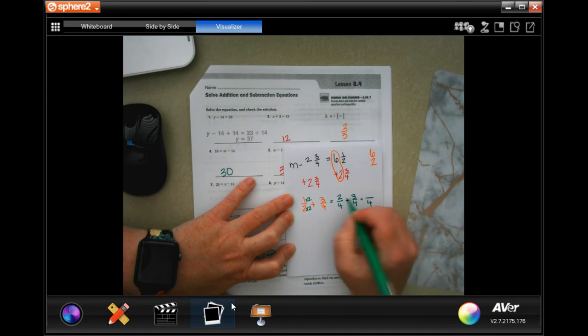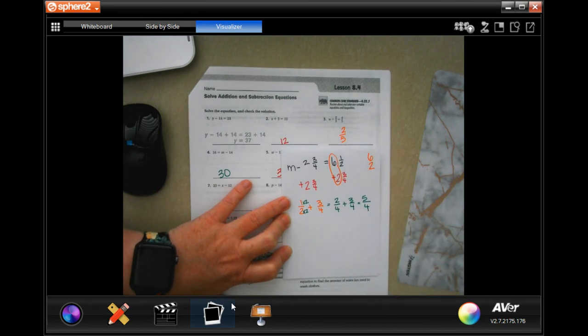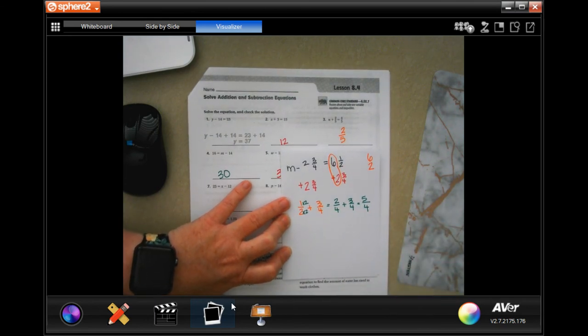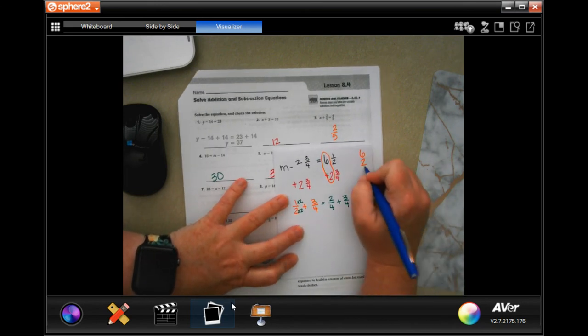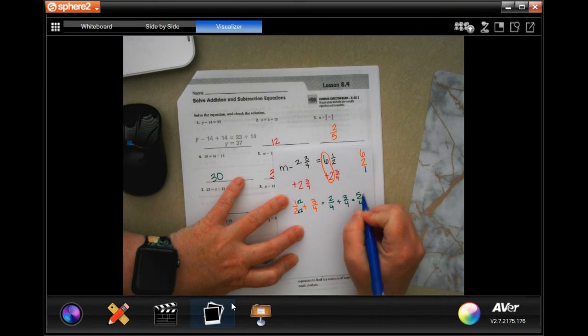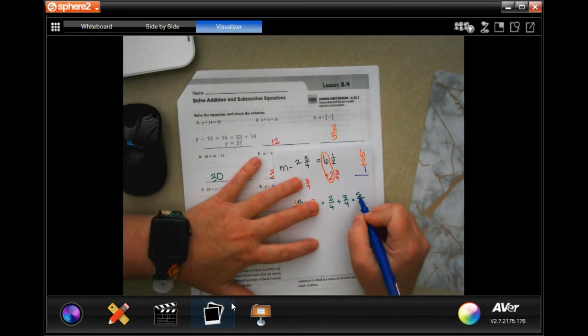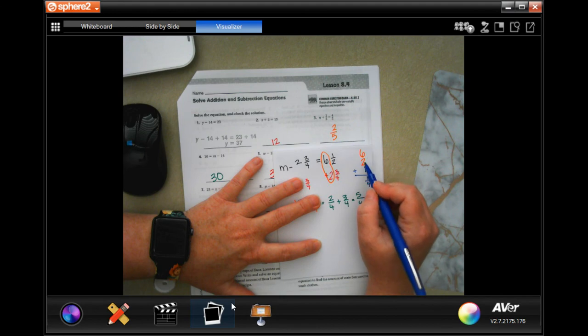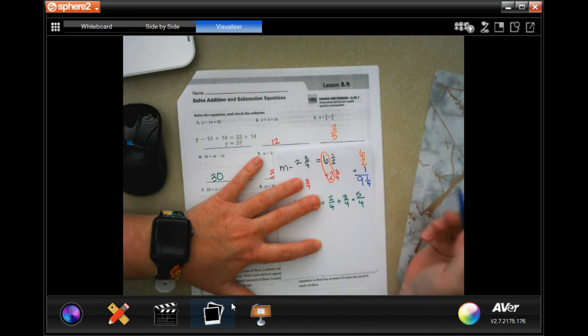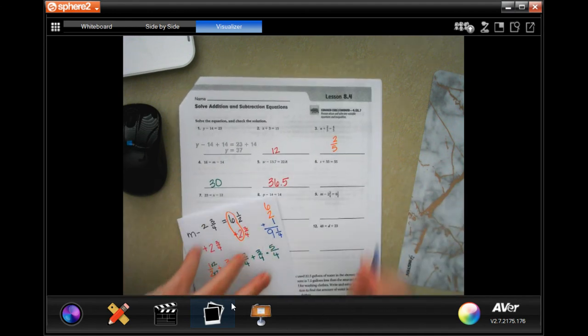Denominator stays the same. 2 plus 3 is 5. Now, you will notice that the top is bigger than the bottom and not a big problem. 4 goes into 5 one time. I'm going to add that one whole number there. 4 goes into 5 one time. I would have 1 left over, and my denominator stays the same. Now all I have to do is add up my whole number. 6 plus 2 is 8, plus 1 more is 9. 9 and 1 quarter.